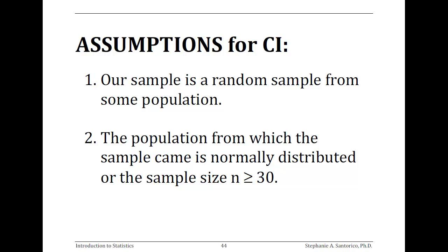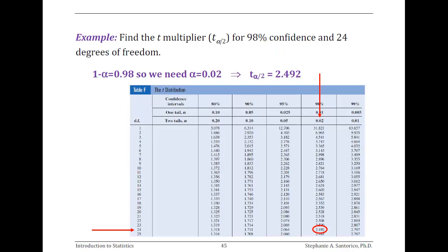Before we go on to figure out how to get that T value, the assumptions for being able to do this are: we have a random sample from the population, and the population that the sample came from is either normal or has a sample size greater than or equal to 30. The only assumption missing here compared to Section 7-1 is that we don't know sigma. For a Z confidence interval we have three assumptions; for a T confidence interval we have two.